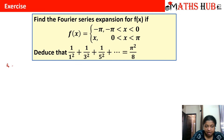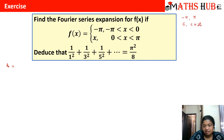Let us calculate a₀. If you compare this interval with the general interval c to c plus 2l, you will find that c is minus π and l will come out to be π.